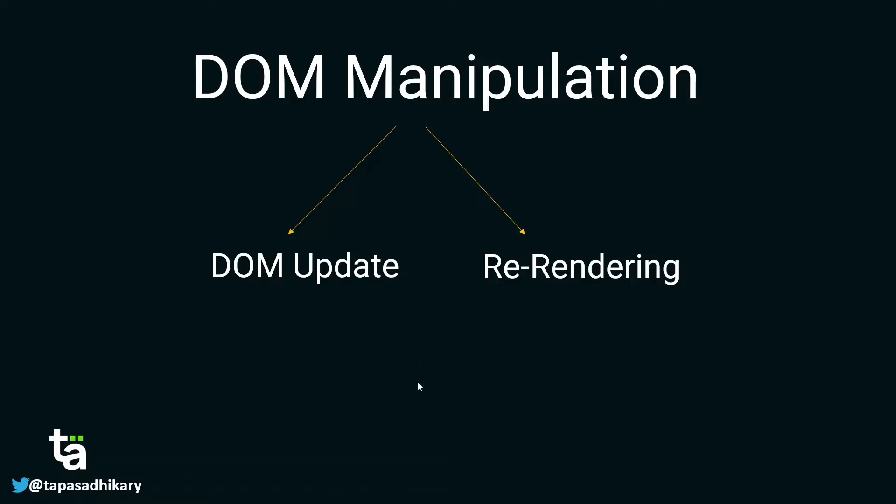The querying and updating parts are relatively lighter operations, but re-rendering on the browser after an update is a costly operation. This means if you update the DOM very frequently you may end up reducing your app's performance and it might become slower. That is where libraries and frameworks like React come into picture. React's declarative nature means you don't have to update the DOM yourself — you tell React what to do and React does it for you.